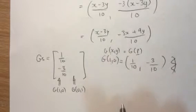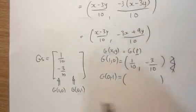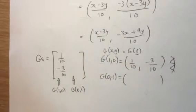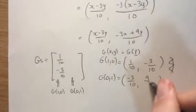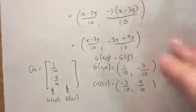Just by considering how we plug values into a linear transformation. Next one, Y is now 1, and X is 0. So we end up with negative 3 on 10, 9 on 10, just because we put a 1 in there, it's a 0, it's just a 9 on 10.